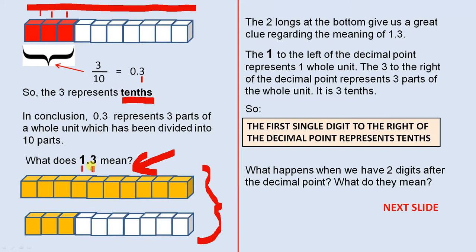So this three here represents those three parts there, which are three parts out of ten. So it is three tenths. That's that three there. So, the first single digit to the right of the decimal point represents tenths.